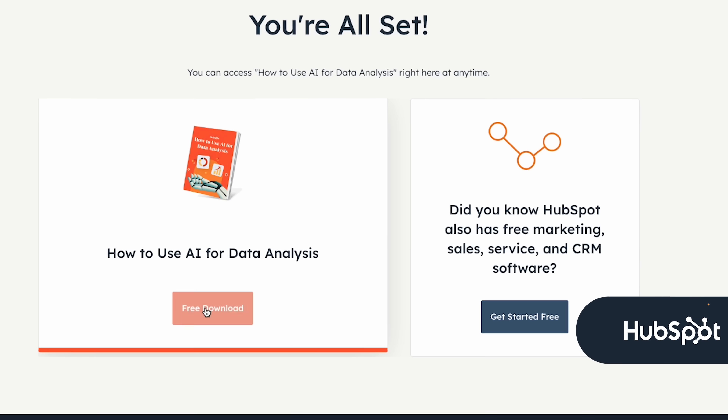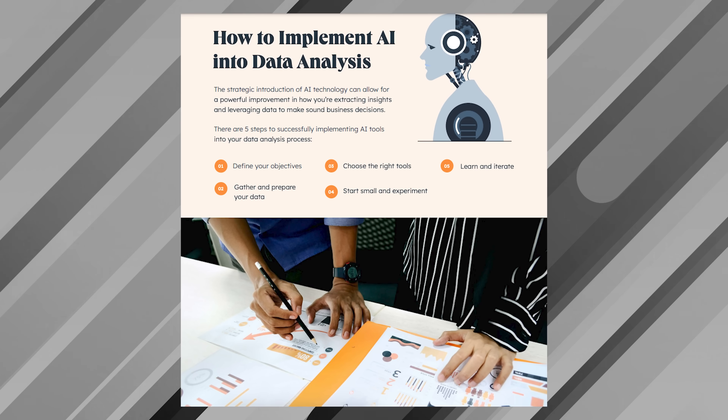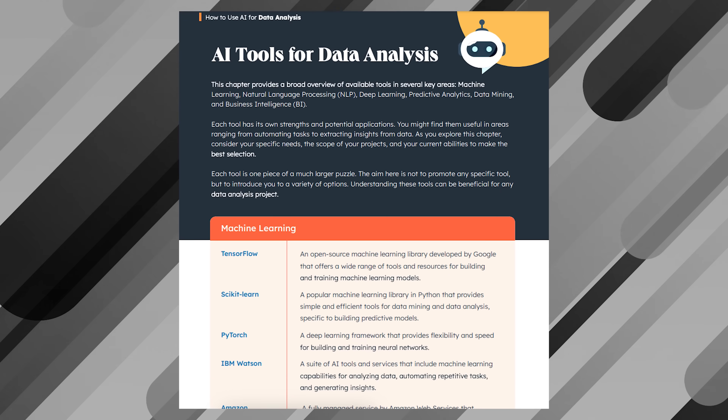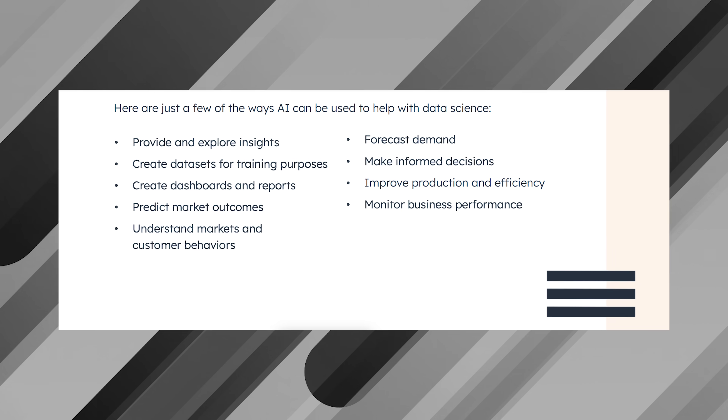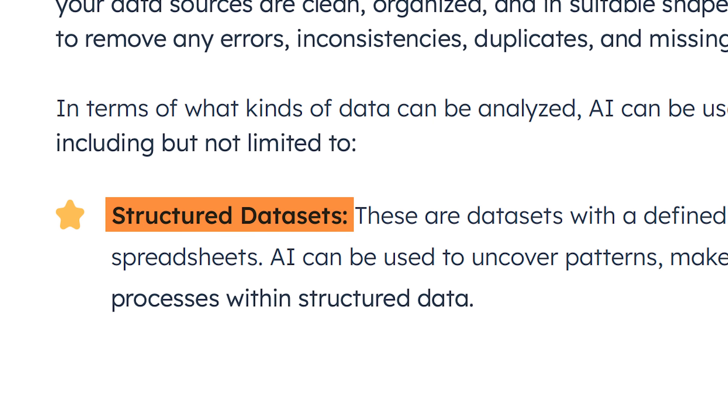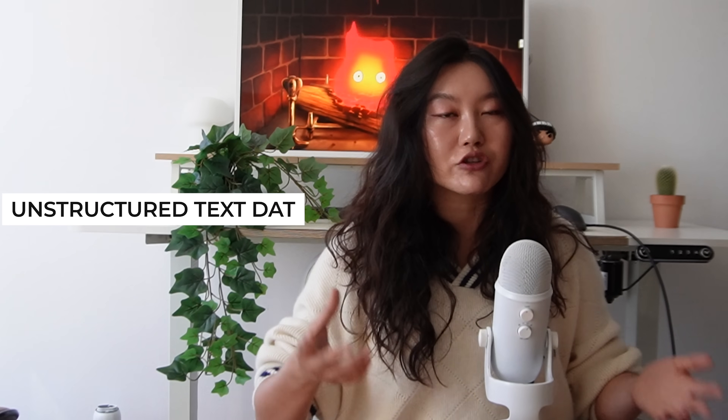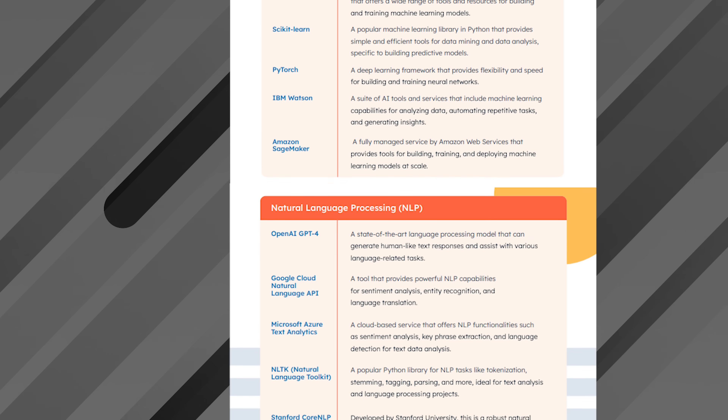If you want to dive deeper into incorporating AI into your workflows, HubSpot has a free guide on how to use AI for data analytics. It covers how to integrate AI into your workflows, benefits and challenges, and an overview of key tools. It includes a five-step framework for your analysis workflow and notes that the type of data — structured tabular versus unstructured text — matters a lot for which AI tools and techniques to use. Download it free using the link in the description.